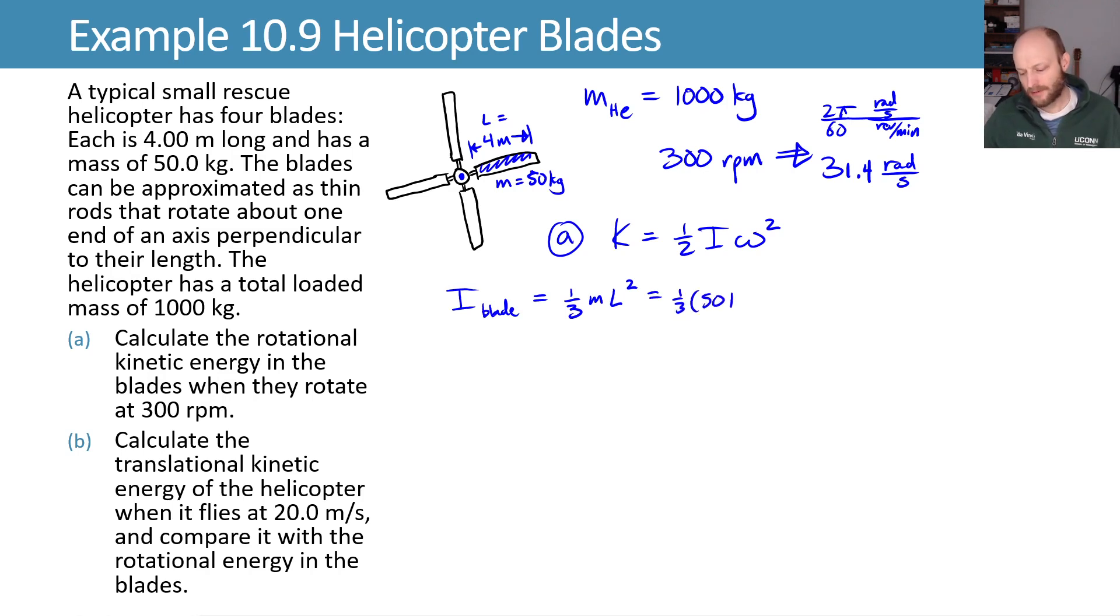We plug in our values, 50 kilograms for the mass and four meters for the length, to get a moment of inertia for one blade. And note that since there are four of these, our total moment of inertia will be four times whatever we got for one blade, leaving us with a total moment of inertia of 1067 kilogram meter squared.